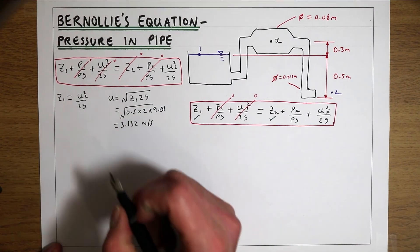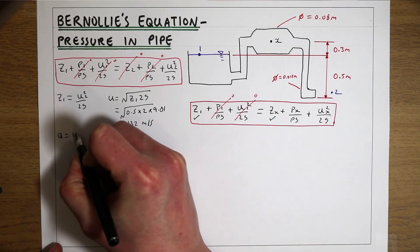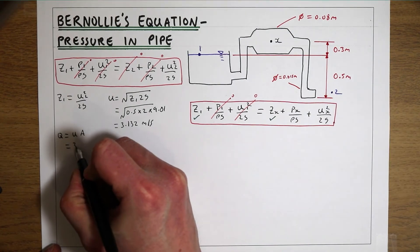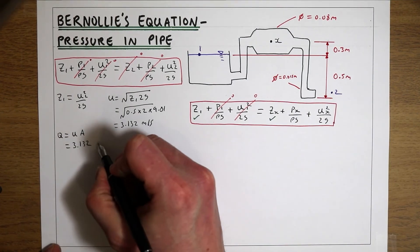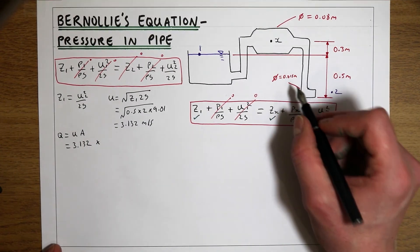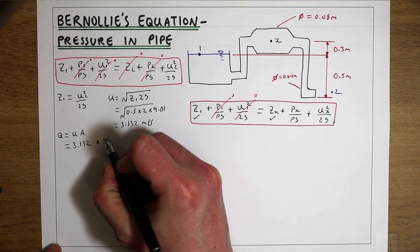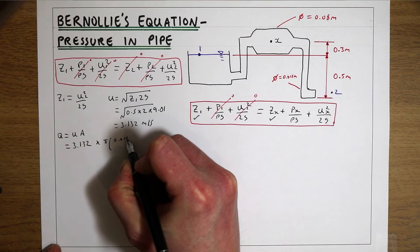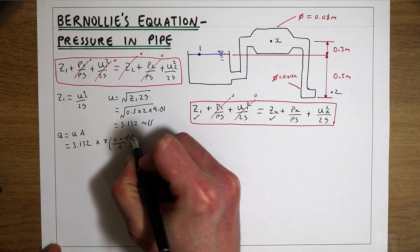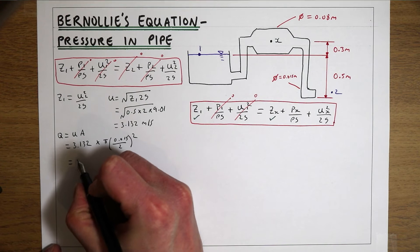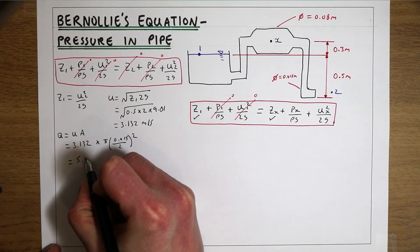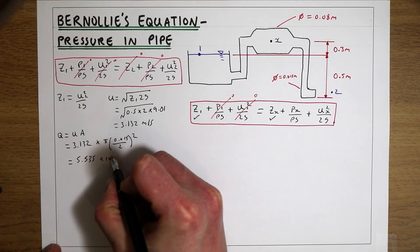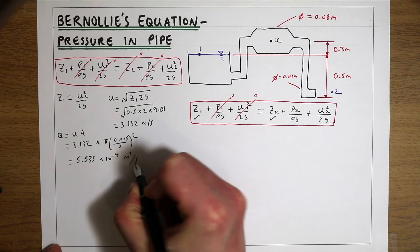We can then work out the flow in the whole system: Q = U × A. The velocity is 3.132 m/s, and the area at this point is πr² = π × (0.015/2)², which gives us a flow of 5.535 × 10⁻⁴ metres cubed per second.